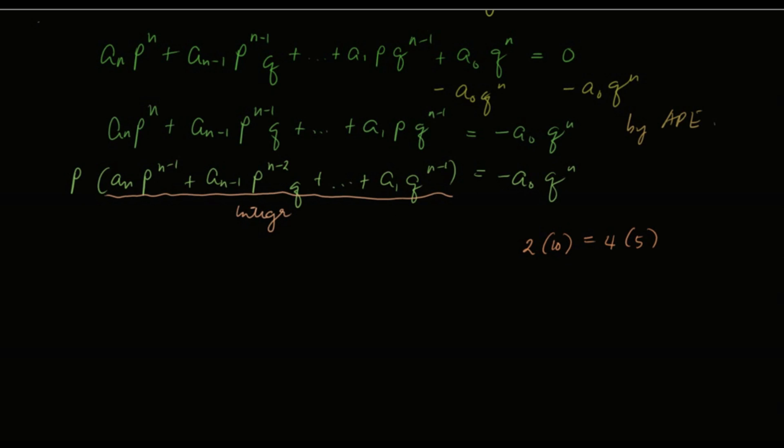p times an integer is equal to negative a sub 0 q to the n. p over here is a factor of the left side. p is a factor of the left side, so it should also be a factor of the right side.